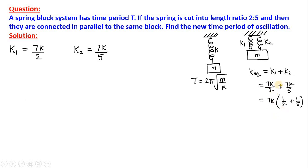Means 7K we can take common 1 by 2 plus 1 by 5. This 1 by 2 plus 1 by 5 will be 5 times 1, 5 plus 2 times 1. So, we get 7 divided by 10. So, 7 into 7 is 49 and divided by 10K. This is the K equivalent of this system.